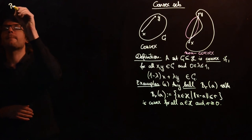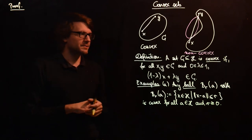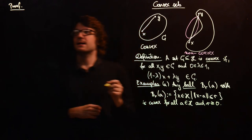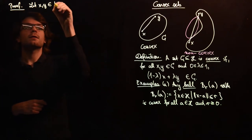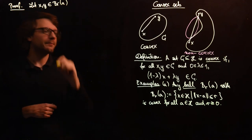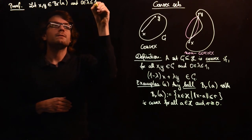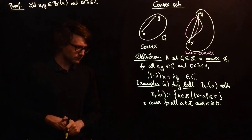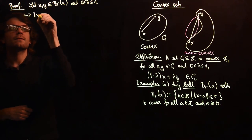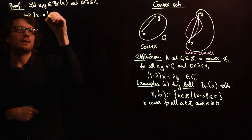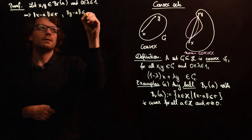Let's start with the proof, going directly from the definition. We take arbitrary points x and y in C — in our case the ball B_r(a) — and lambda between 0 and 1. Being in B_r(a) means the distance from x to a is less than or equal to r, and the distance from y to a is less than or equal to r.